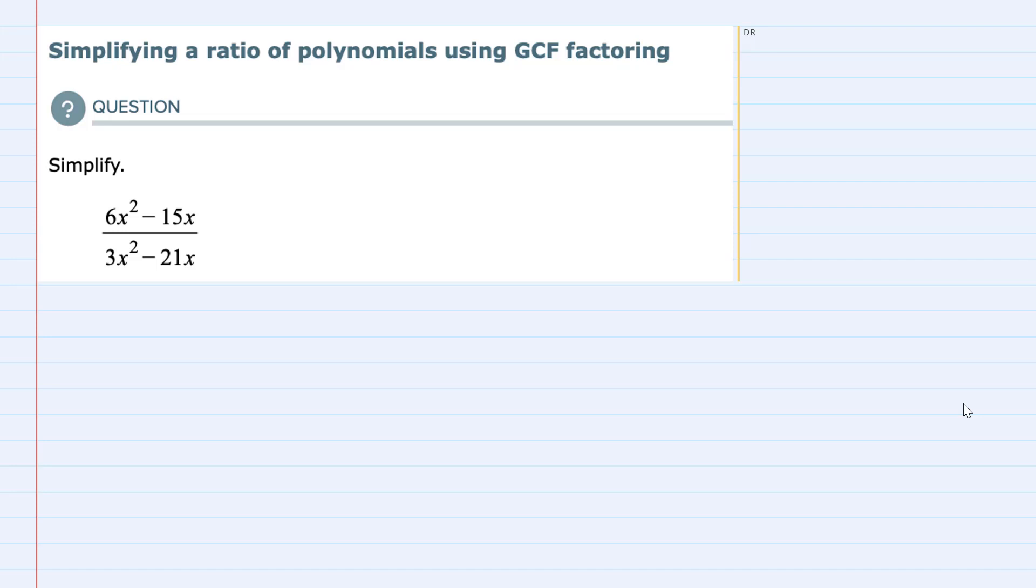In this video I'll be helping you with the Alex problem type called simplifying a ratio of polynomials using GCF factoring. So GCF is greatest common factor.